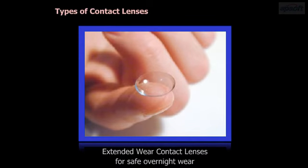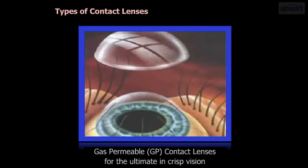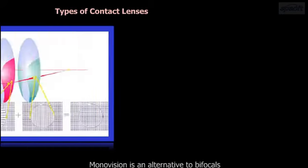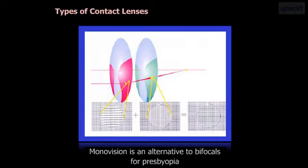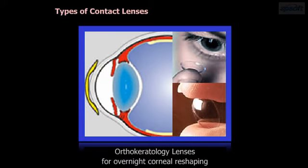Extended wear contact lenses allow for safe overnight wear. Gas-permeable (GP) contact lenses offer the ultimate in crisp vision. Monovision is an alternative to bifocals for presbyopia. Orthokeratology lenses are used for overnight corneal reshaping.